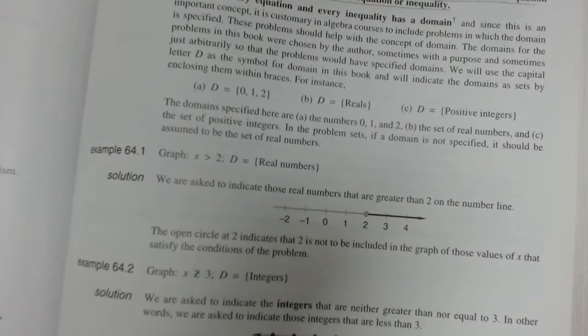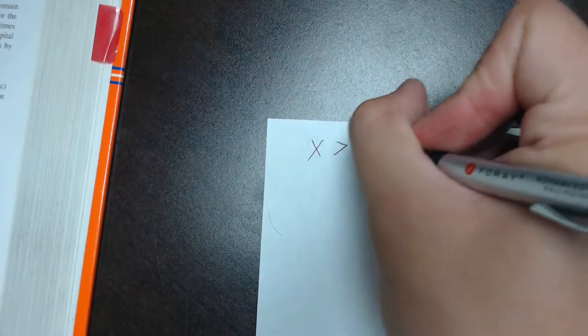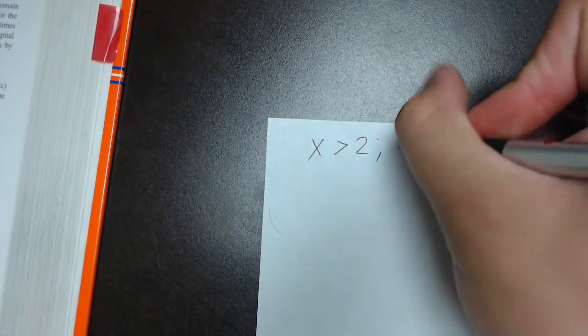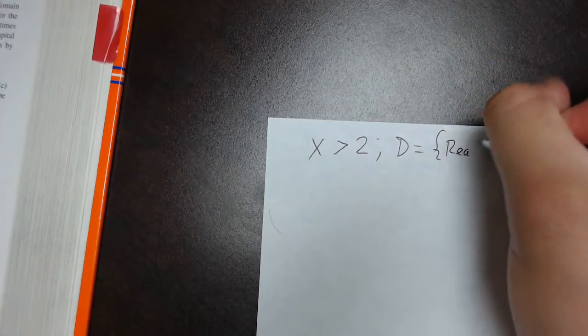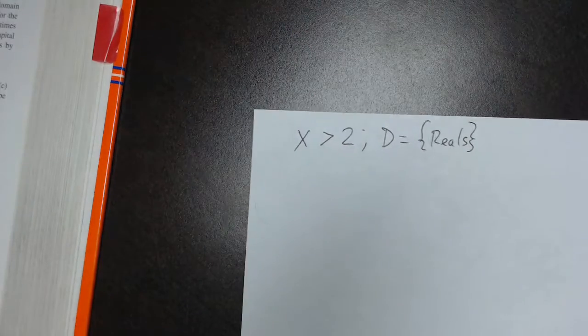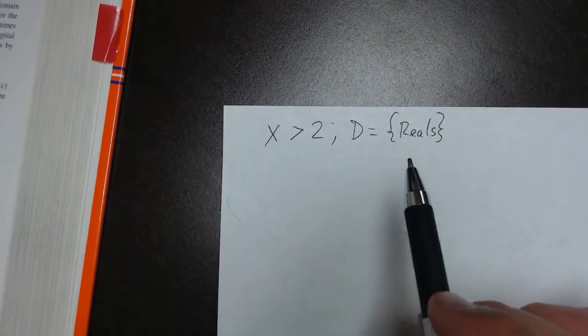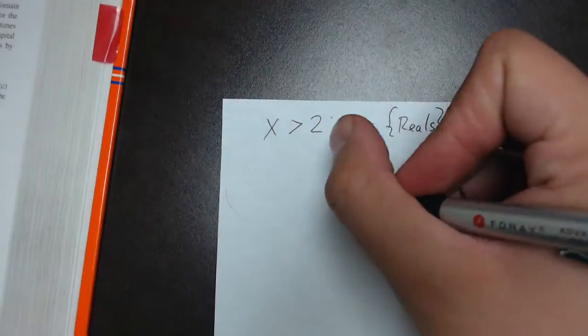We'll take this example. They tell us to graph x is greater than 2 with a domain of real numbers, or reals. Now the funny thing about the domain of reals is it's not much of a bubble because real numbers is like every number. So we'll just go ahead and we'll graph this.